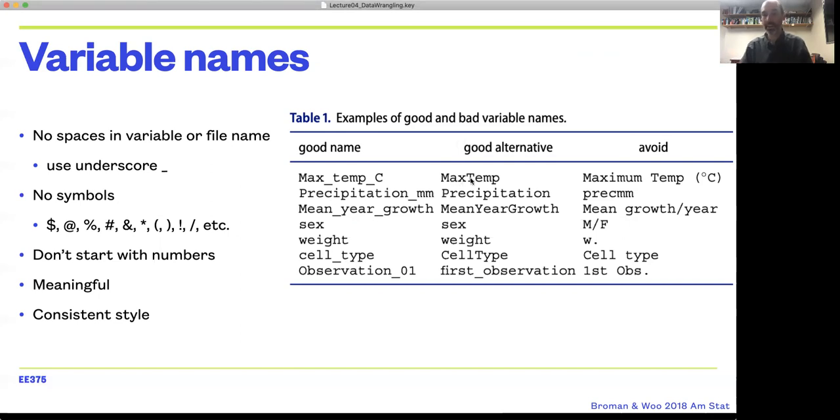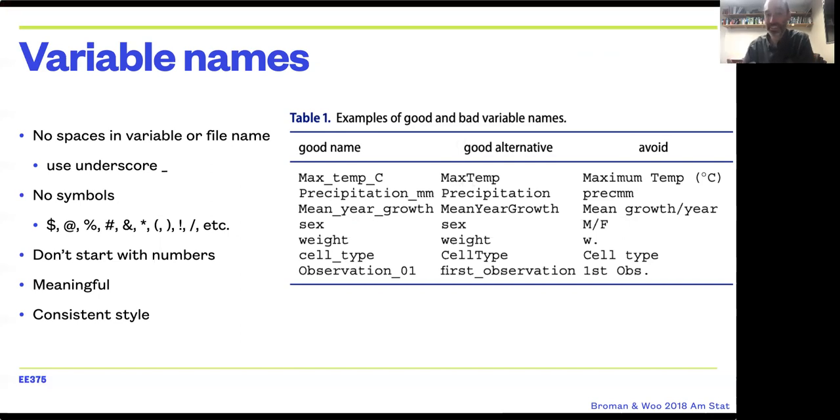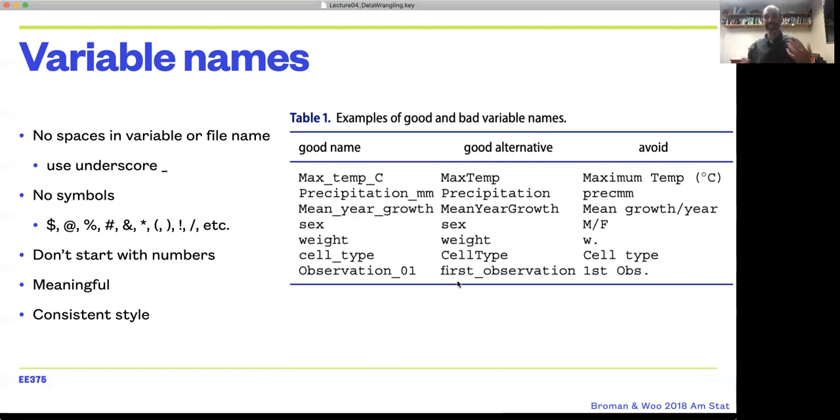If you're using what's called camel case, where instead of using spaces you just capitalize every word, use that consistently. Don't flip back and forth. In addition to making your code more readable, it also just makes it easier to remember what a variable was named because you have a consistent style for naming variables. There's no single style that's perfect—it's just what works for you and being consistent.